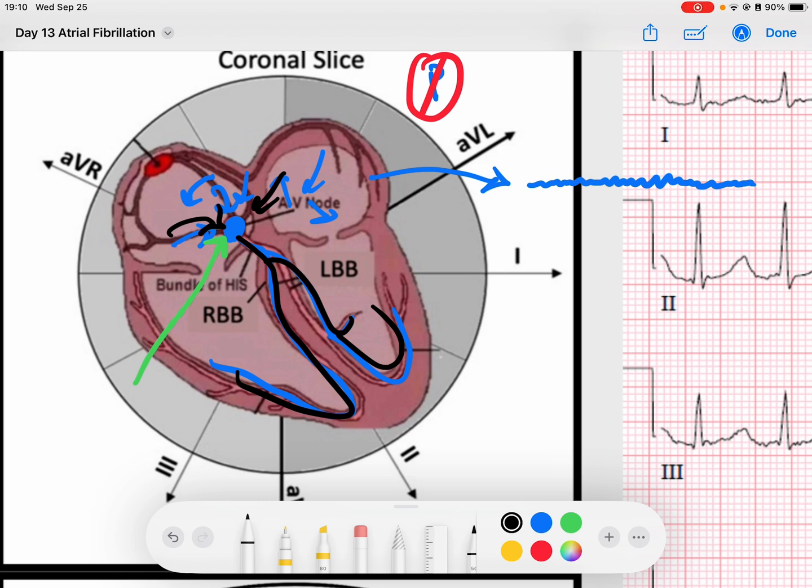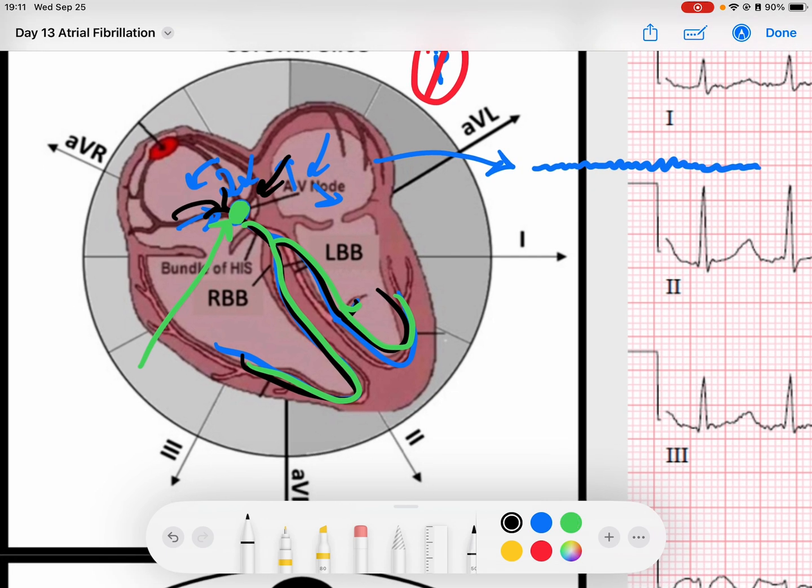What ends up happening is that the QRS complex, which we know is generated when this AV node captures the signal and sends it down, those QRS complexes are generated when the AV node recovers from the previous beat. The AV node is going to recover from the previous beat in an unpredictable pattern. So what ends up happening is you get somewhat random conduction.